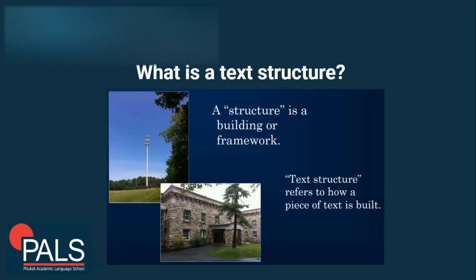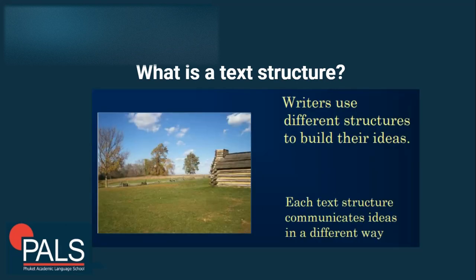Structure serves as a framework for an object, and it's similar with text — because without a structure, the text will not be organized. Text structure refers to how a piece of text is built. It's the framework of the text, and writers use different structures to build their ideas. It depends on the purpose of the text, so there are some structures that will not work for some purposes.